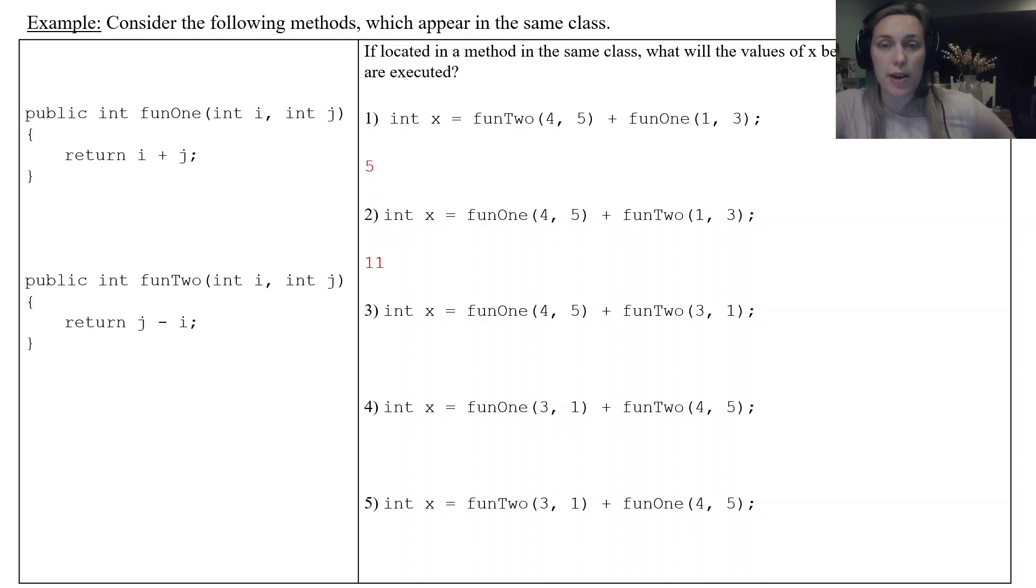If you wanted to pause the video and try the next three on your own feel free to and then you can just press play when you're ready to check your answers. But this next one fun one adds the two together. Fun two takes the second and subtracts the first. So this is nine and this is a negative two. Nine plus a negative two is going to give you seven.